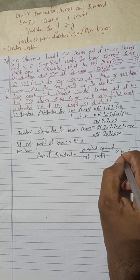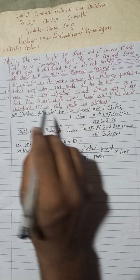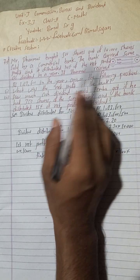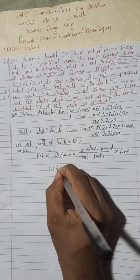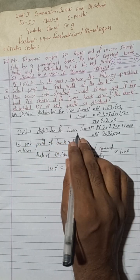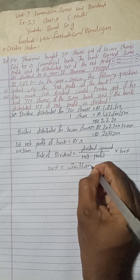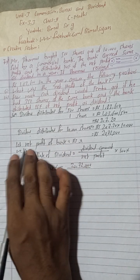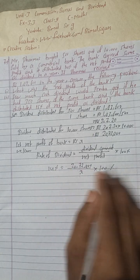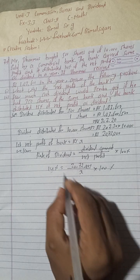The rate of dividend is 14 percent as given. The dividend amount for 10,000 shares is Rs 20,72,000. So: 14 = (20,72,000 / x) × 100. The percent cancels out. Rearranging, x goes to this side in multiply form and 14 goes to the denominator.